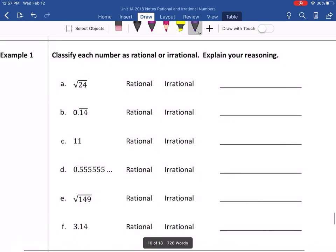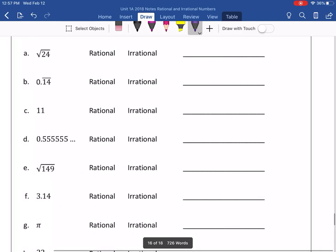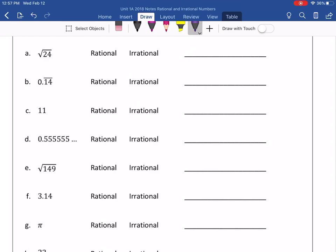If you look at number A, or letter A, the square root of 24, is that rational or irrational? Well, we know perfect squares are rational. Is the square root of 24 a perfect square? I agree. No, it is not. So, therefore, it is irrational.